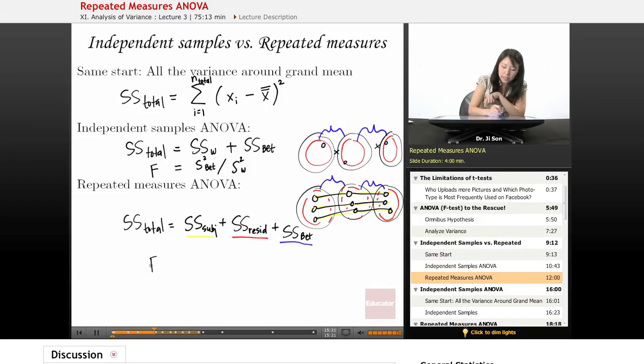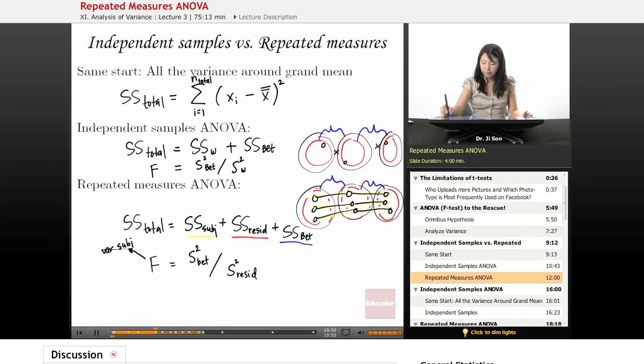So our F statistic will actually become our variability between, divided by our variability residual. And in fact, we just want to take this guy out of the equation. We want him out of the equation of F. So F, it doesn't count the variability from the subjects or individual difference. They're not interested in that. Okay. So if I wanted to show you this in a picture, here's what I would show you.